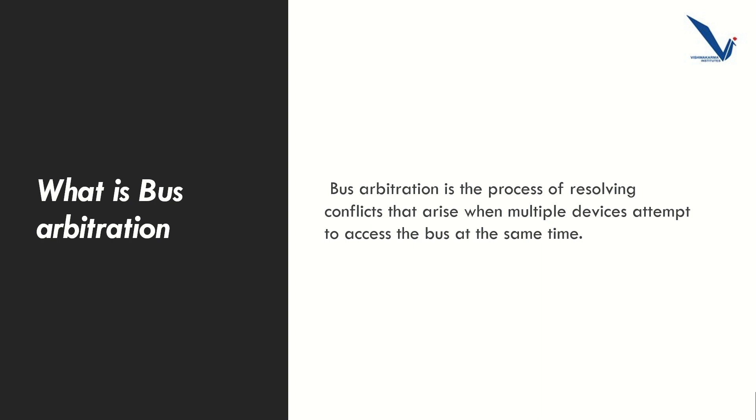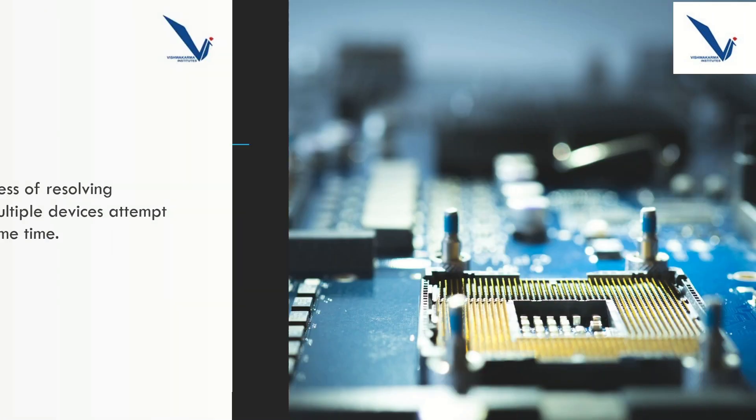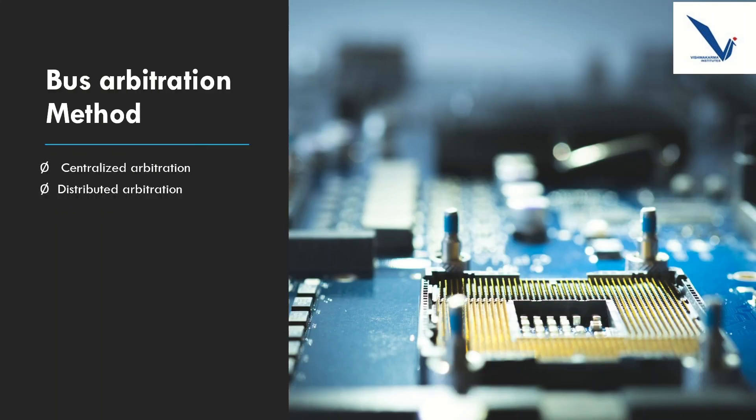There are several types of bus arbitration methods, including centralized and distributed arbitration. In centralized arbitration, a single device known as the bus controller is responsible for managing access to the bus. In distributed arbitration, devices compete for access to the bus by sending a request signal and waiting for the grant signal. Bus arbitration refers to the process by which the current bus master accesses and then leaves the control of the bus and passes it to another bus requesting device.